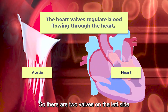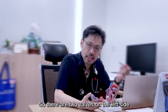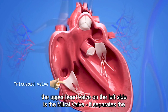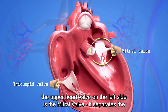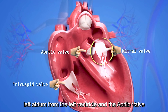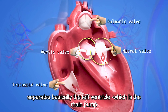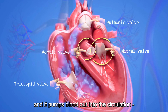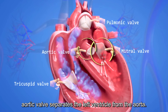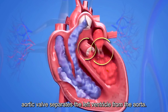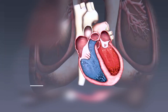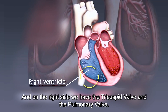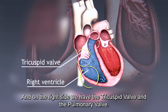There are two valves on the left side. The upper heart valve on the left side is the mitral valve, which separates the left atrium from the left ventricle. The aortic valve separates the left ventricle — which is the main pump that pumps blood out into the circulation — from the aorta. On the right side, we have the tricuspid valve and the pulmonary valve.